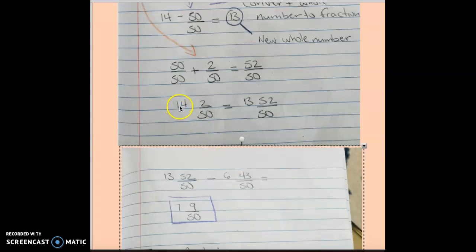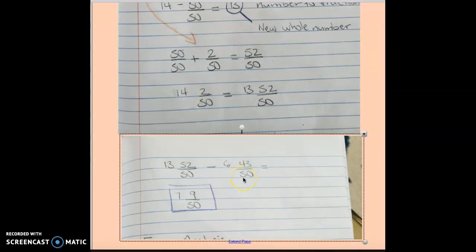Now that I know 14 and 2 over 50 equals 13 and 52 over 50, I can now subtract 6 and 43 over 50. So 13 and 52 over 50 minus 6 and 43 over 50 equals 7 and 9 over 50.